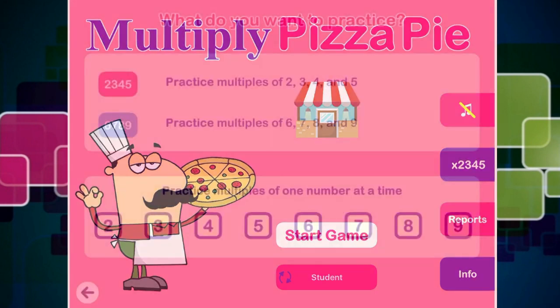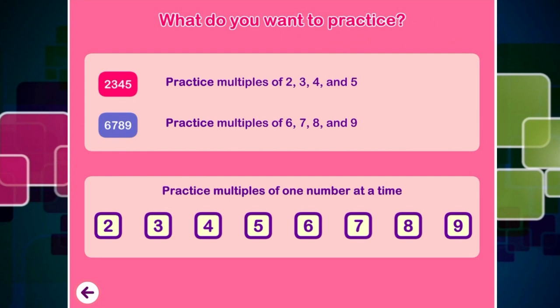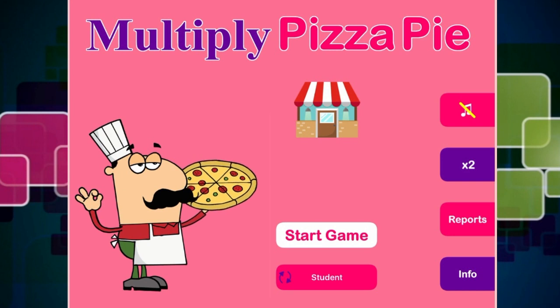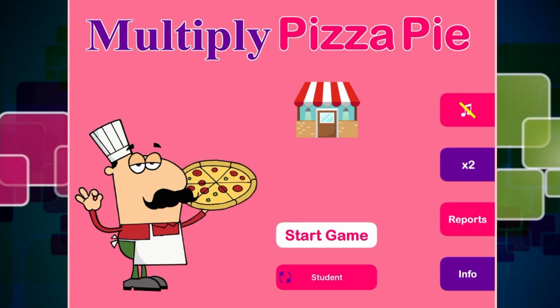So you can click onto the purple button and you can practice your multiplications. If you want to practice multiples of two, three, four and five, click onto that and practice multiples of one number at a time. And basically, when you go back into the game, you will then only get asked questions regarding those particular numbers that you set up on the homepage.